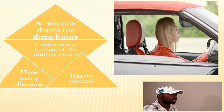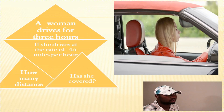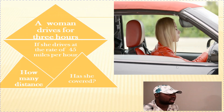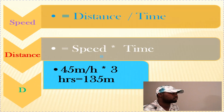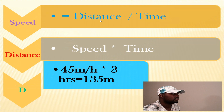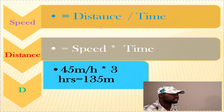Another exercise: a woman drives for 3 hours at the rate of 45 miles per hour. How much distance has she covered? We are going to use the same formula: speed equals distance over time. The question asks for distance, so we make distance the subject of the formula using cross multiplication: time multiplied by speed equals distance. So distance equals speed multiplied by time.